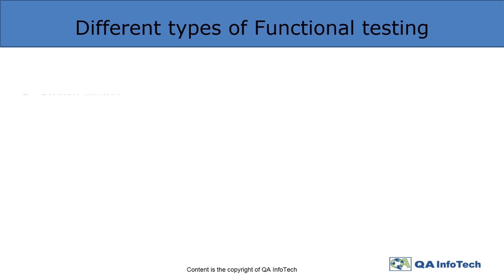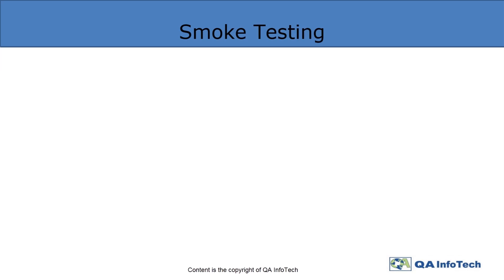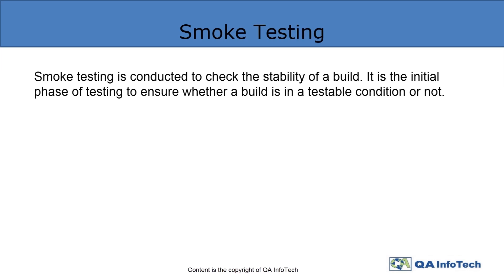Finally, the sixth step is checking that the application is working as expected. There are various types of functional testing, but here we will discuss only four basic types: smoke testing, sanity testing, regression testing, and UAT, which is user acceptance testing.